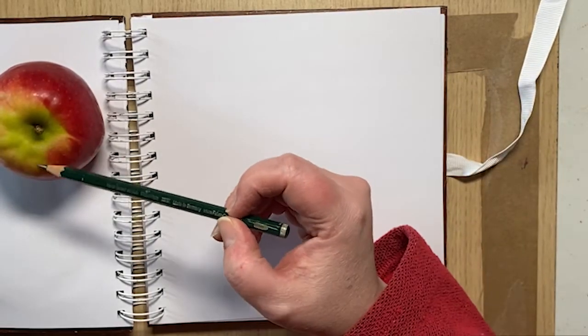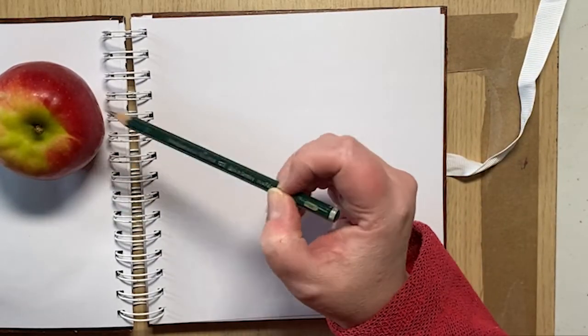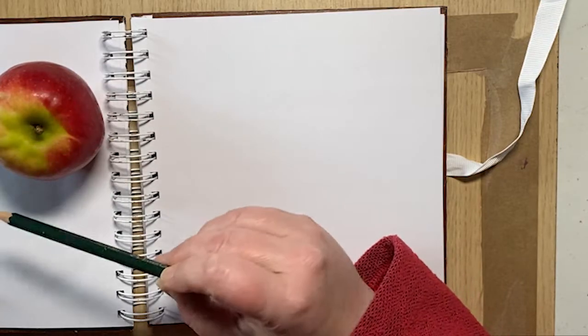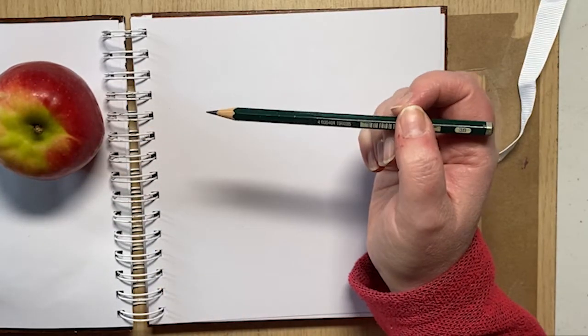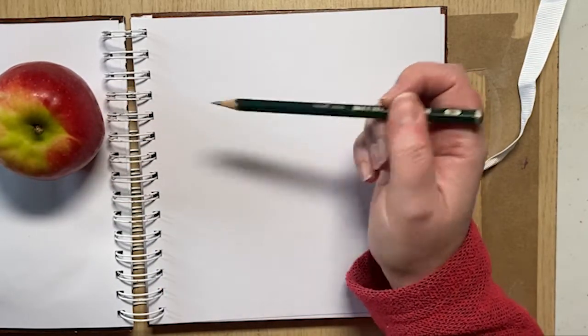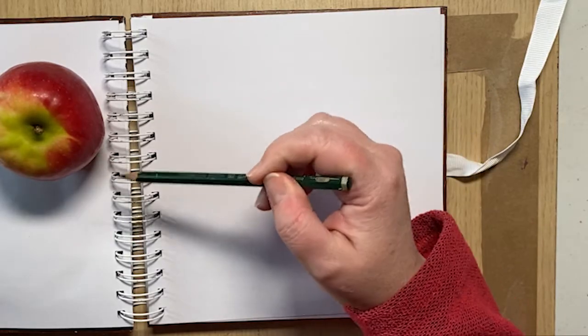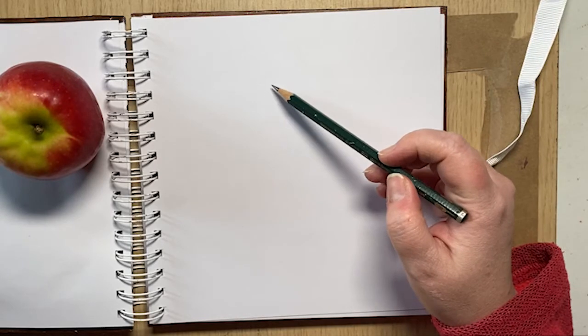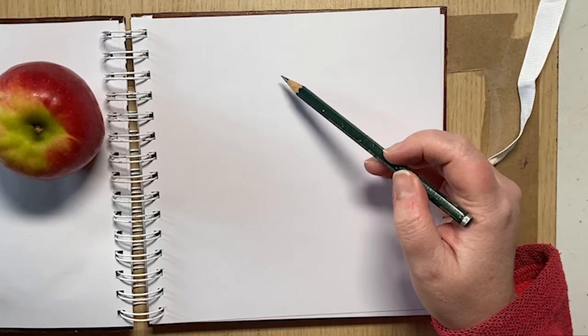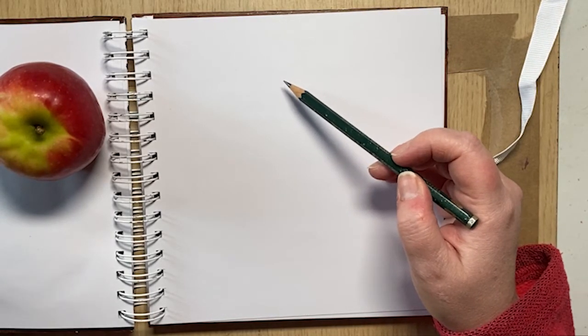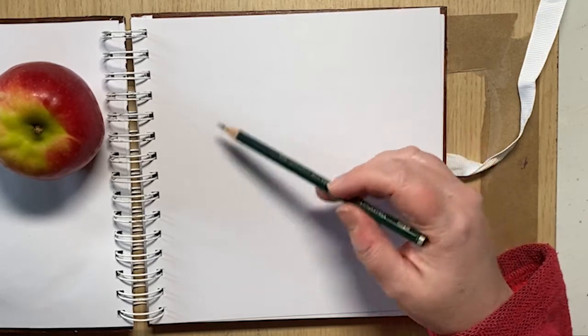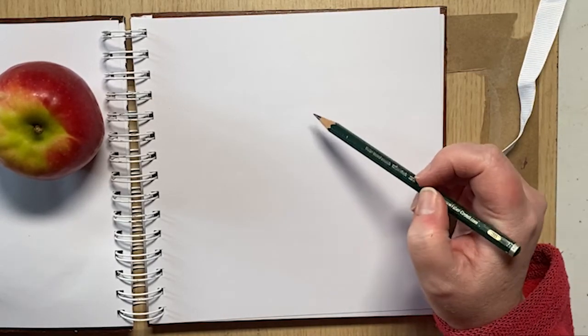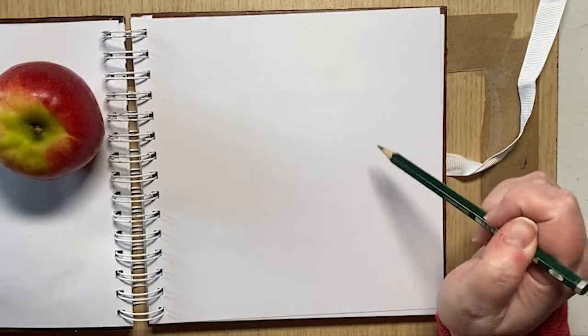So first of all I'm just going to look at the shape of the apple. Apples aren't always perfectly shaped, so obviously with your artistic license if you don't like the shape of the apple, you could change it a bit if you wanted to. This one's quite an odd shaped apple. I might make it more plumper around the top, give it that kind of heart shape.